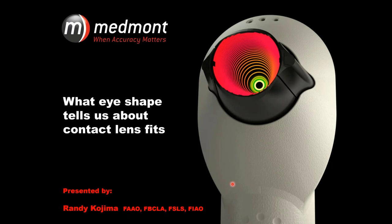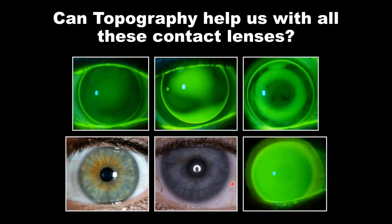Thanks Chris. Hi everybody, and welcome again to the session on what eye shape tells us about contact lenses. My name is Randy Kojima, and the goal today is to talk about how we can use the Medmont topographer before we fit contact lenses — to appreciate which direction we should go in lens fits, and how the topographer can help us be more efficient in contact lens practice. It is an incredibly powerful tool that aids us with virtually any type of specialty contact lens, or even conventional contact lenses like the big box brands.